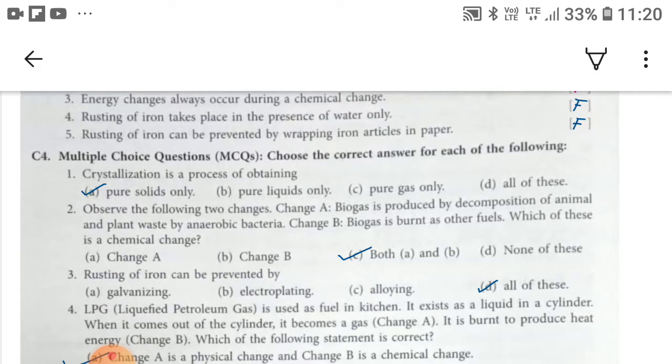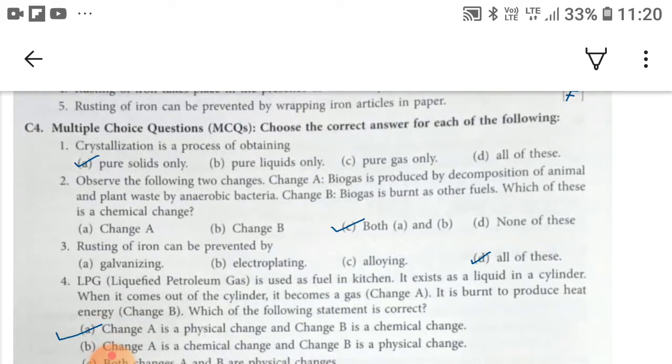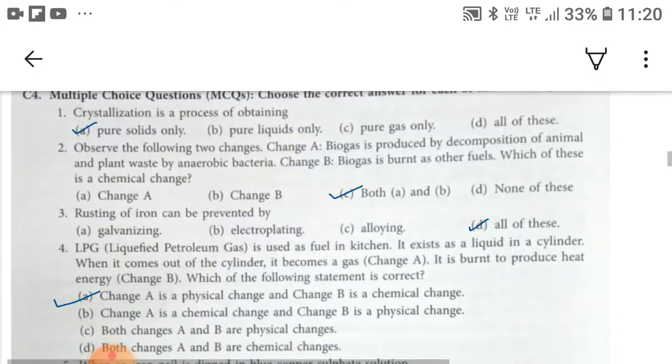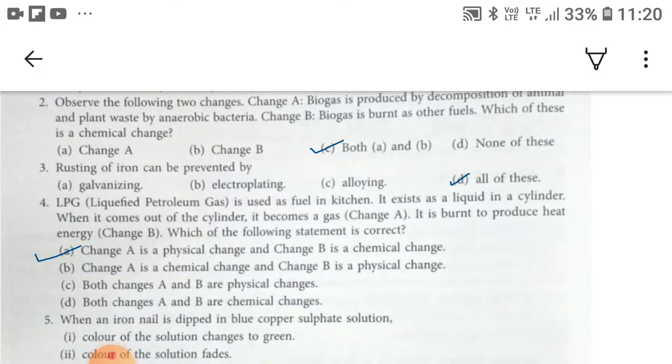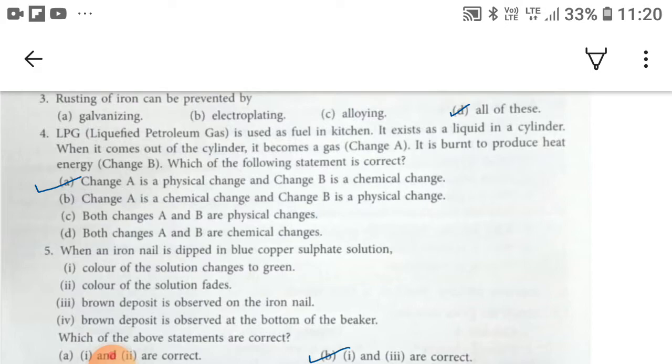Now the C part of exercise, multiple choice questions. Choose the correct answer for each of the following. For the first, A option, pure solids only is correct. For the second, C option, both A and B is correct. For third, D option, all of these is correct. For fourth, A, change A is a physical change and change B is a chemical change, is correct.